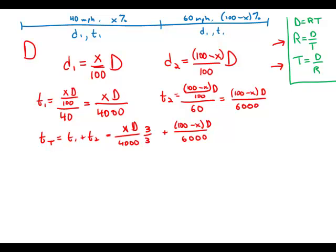So all I have to do is multiply this one by 3 over 3, and this one by 2 over 2. And so then I get common denominator of 12,000, and in the numerator, I get 3X D, I get plus 200 D, and then minus 2X D. And of course, I have the 3X D and the 2X D, and so those cancel.